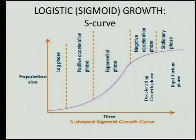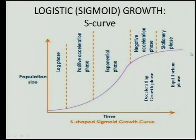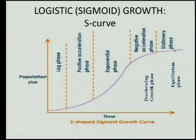That flattening represents an equilibrium — more may be born but some die, so the numbers of the population stay more or less the same. The number at which the population reaches this equilibrium phase is the carrying capacity. Carrying capacity is the number of individuals that the environment can support, and it is reached at that equilibrium point.